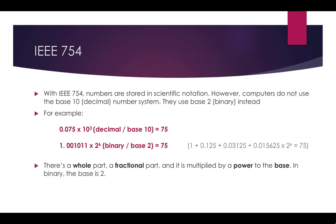With IEEE 754, numbers are stored in scientific notation, but remember that computers don't use the base 10 or decimal number system — they use base 2 or binary, which is zeros and ones. For example, in scientific notation 0.075 × 10³ equals 75 in the base 10 decimal system. In binary, 1.001011 × 2⁶ is also equal to 75. If you've looked at the video on fixed point you'll be able to read this number; if not, go back to the fixed point representation video and watch that first.